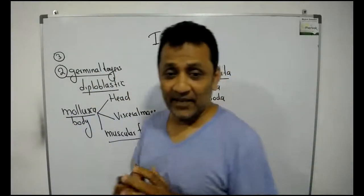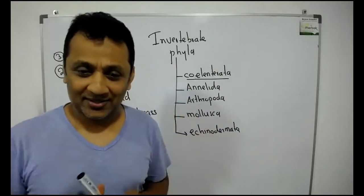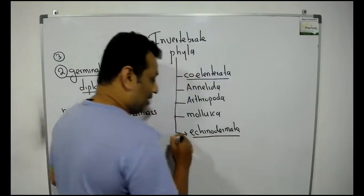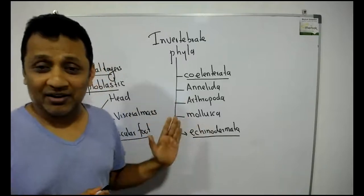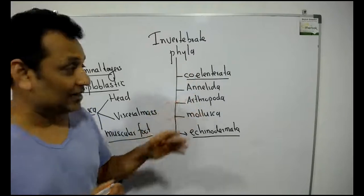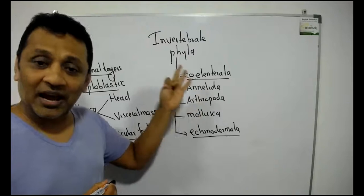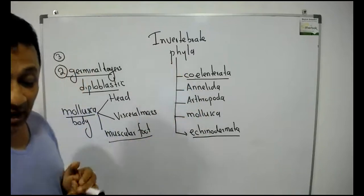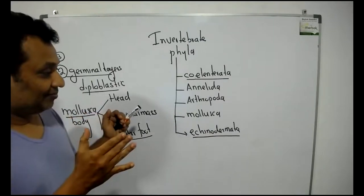Third, living only in marine habitats. That is Echinodermata. Echinodermata members live only in marine environments. Coelenterata live in marine and freshwater. These three live in marine, freshwater, and terrestrial environments. Echinodermata is not so, only marine.